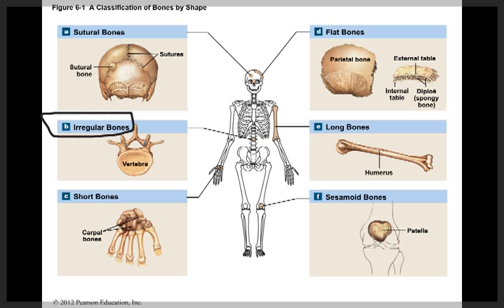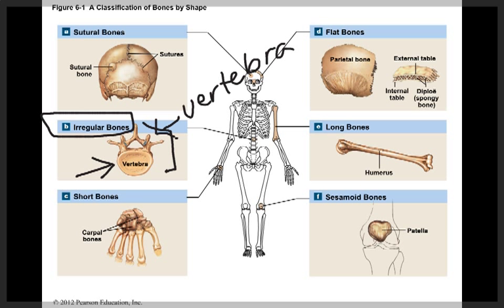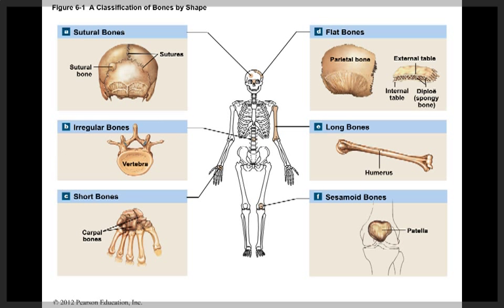Next we have irregular bones. These have complex shapes. Here we see a vertebra, and we can see how complex the shape is — this end of the bone looks very different from the other end.